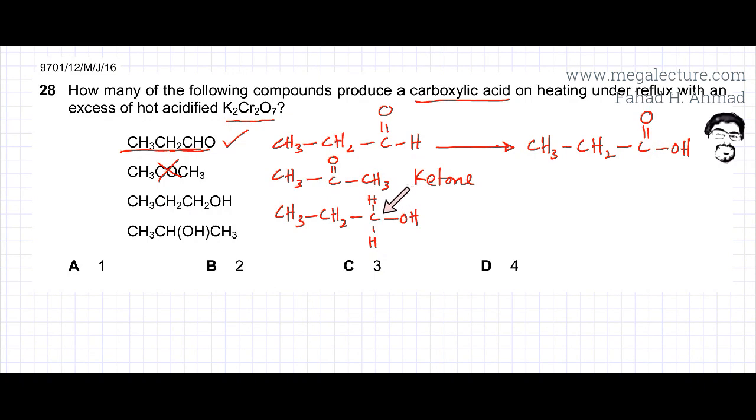Primary alcohols get oxidized into aldehydes and they further get oxidized to carboxylic acids. Here you can see the flow chart: primary alcohol getting oxidized to an aldehyde and further oxidized into a carboxylic acid. This is also correct. It's going to get oxidized to an aldehyde.